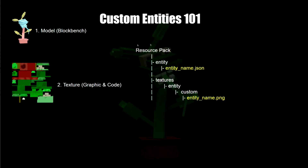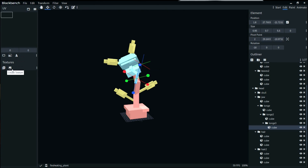Now we're going to look at the texture. The textures are under resource pack > entity > entity_name.json. This file — the entity_name.json — is actually how we're going to link everything together: how we define the model, how the model connects to the texture, and how the item that spawns it gets connected.